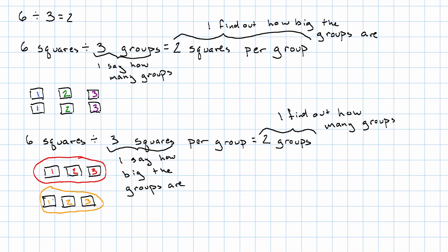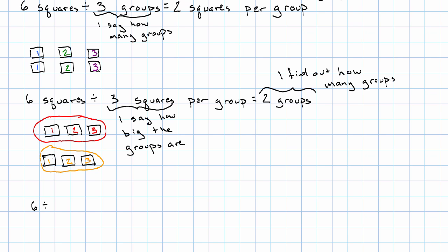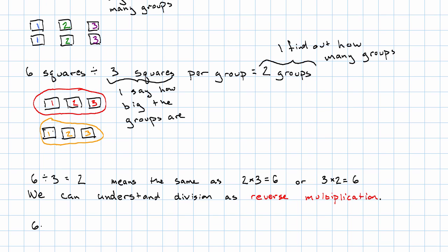This fact that we've just discovered is that six divided by three is two. And this fact, as we can see by looking at the pictures, means the same thing as saying two times three is six, or three times two is six. Division is the reverse of multiplication. The question six divided by three equals what is the same as three times what gives me six. This understanding as reverse multiplication is actually going to help us a lot when we go to actually perform division.